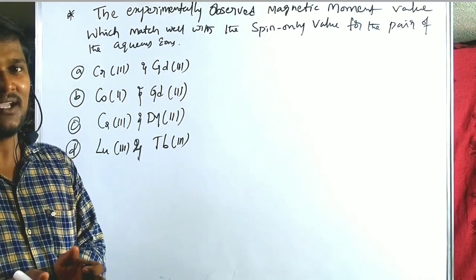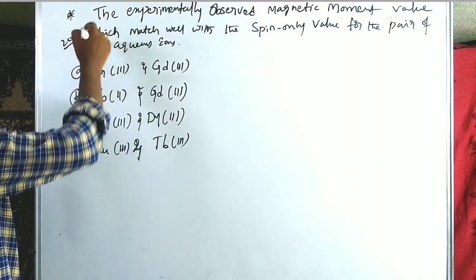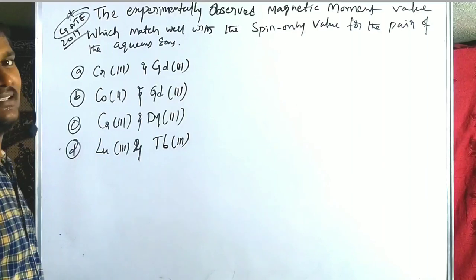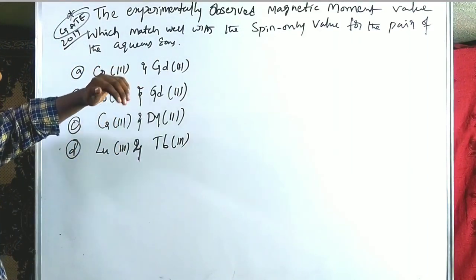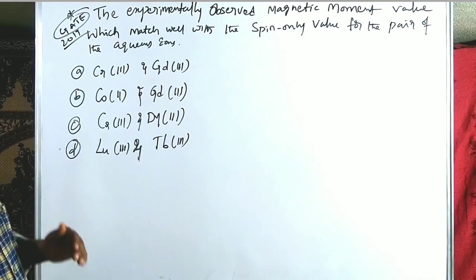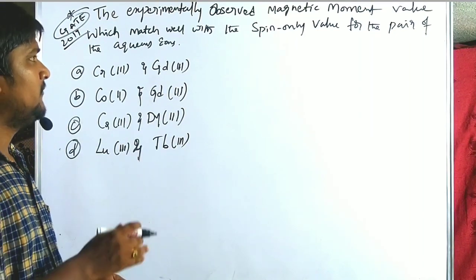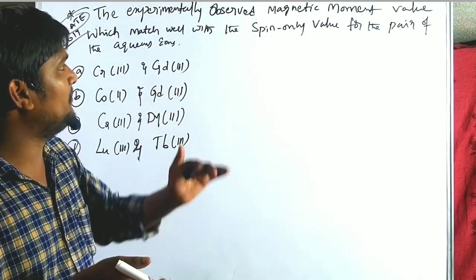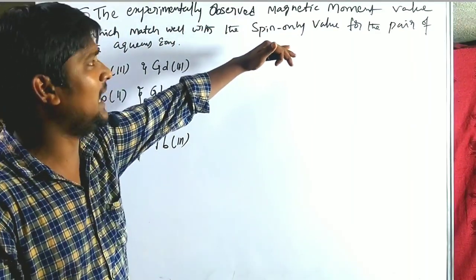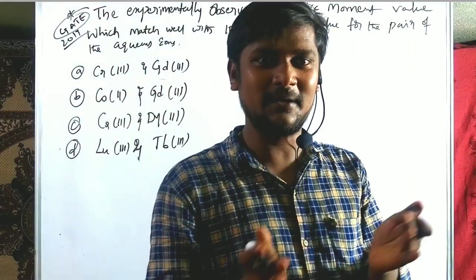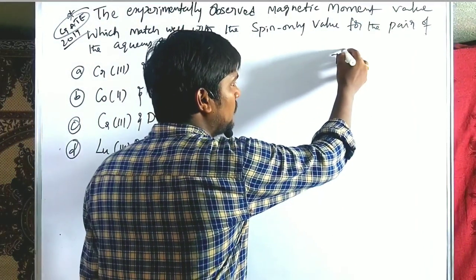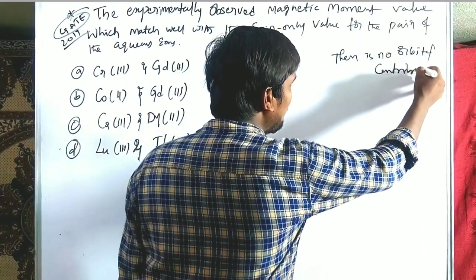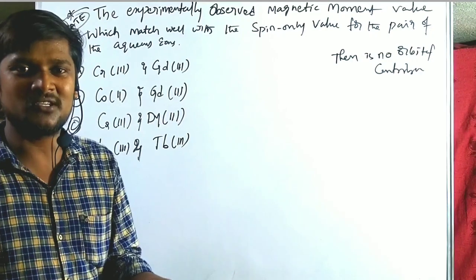In this session, we solve problems from GATE 2019, a 2-marker question. The question asks: which pair of aqua species has experimentally observed magnetic moment values matching well with the spin-only value? When observed and spin-only values are equal, there is no orbital contribution. No orbital contribution occurs when there is a fully filled or half-filled t₂g configuration in d orbitals, or similar in f orbitals.